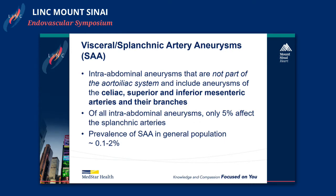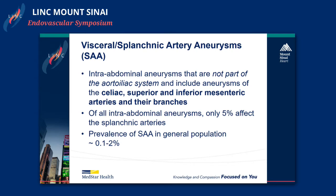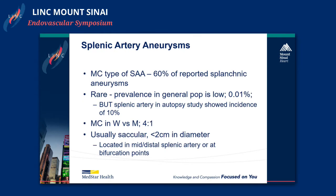Just some definitions of visceral artery aneurysms. These are really aneurysms of the celiac, superior, and inferior mesenteric arteries and their branches. They're relatively rare — only about 5% affect the splanchnic arteries, and the prevalence in the general population is relatively low. Showing a schematic of the distribution and frequency, the most common ones we see are the splenic, followed by hepatic and SMA. Going down the list, they get rarer and rarer, and in practice that's pretty much what we see also.